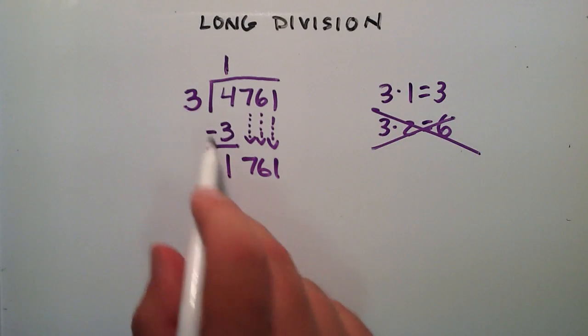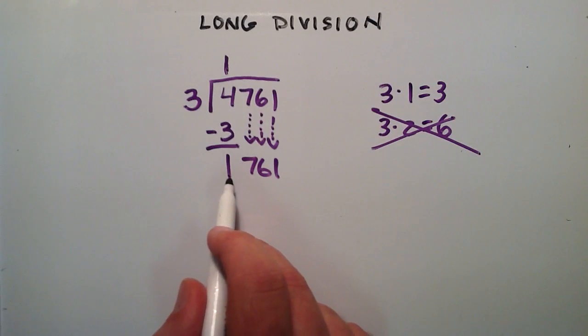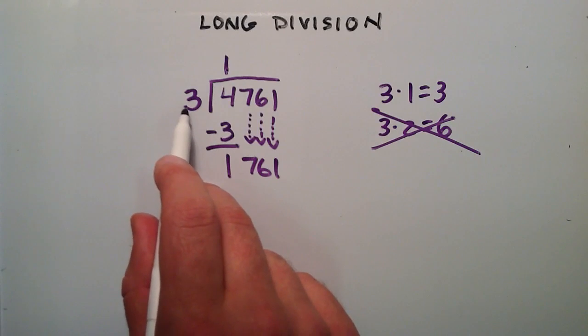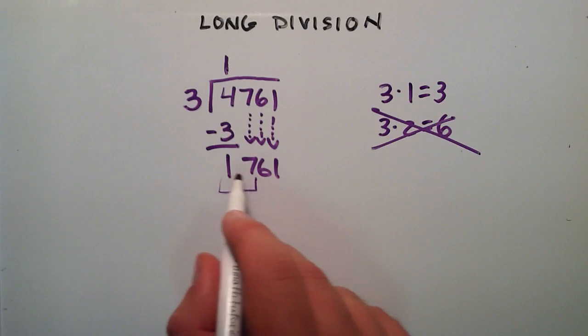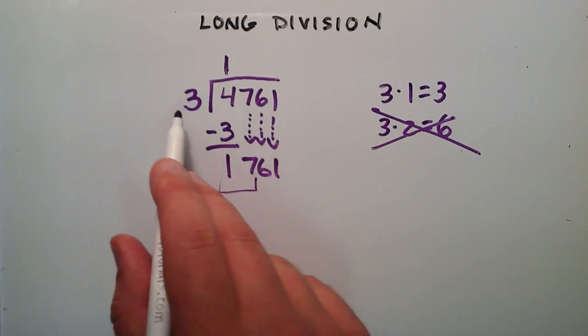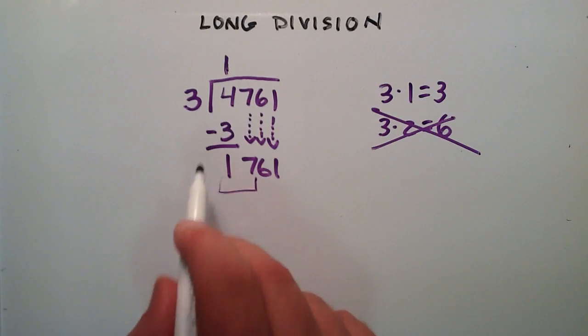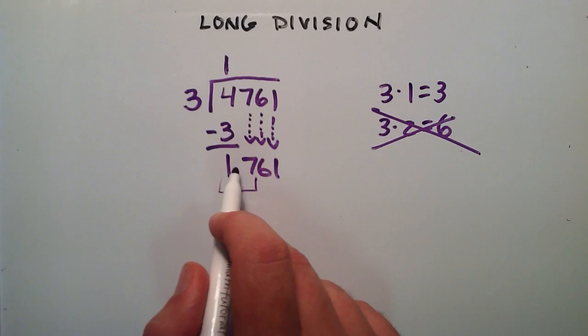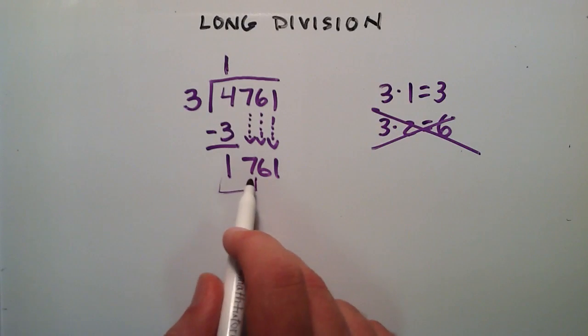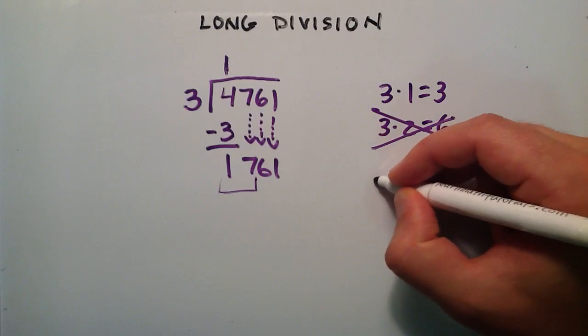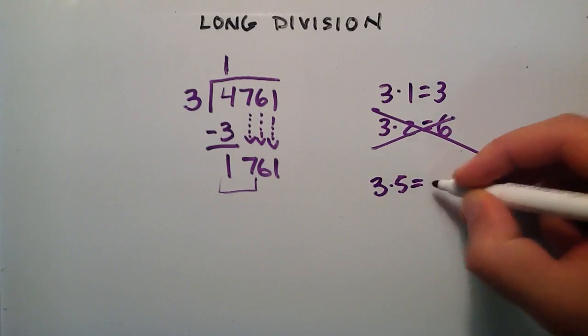So now since 3 is bigger than 1, we're not going to look at how many times 3 goes into 1, but rather we're going to look at how many times does 3 go into 17. So 3 multiplied by what number? What number is the biggest number we can multiply 3 by and have a result less than 17? Well, 3 times 5 is 15.